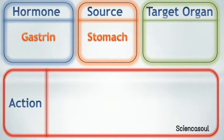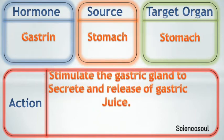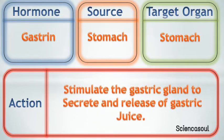First hormone is gastrin. Source of gastrin is the stomach. Target organ of gastrin is also the stomach, and the action of gastrin is to stimulate the gastric glands to secrete and release gastric juice.